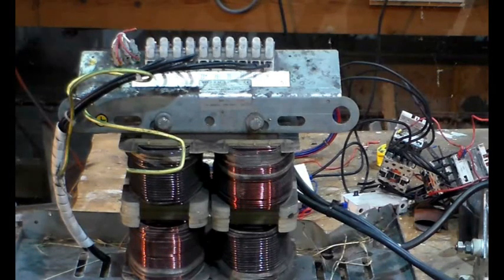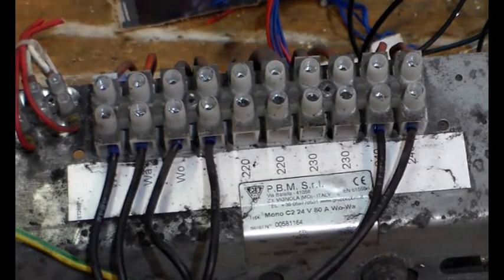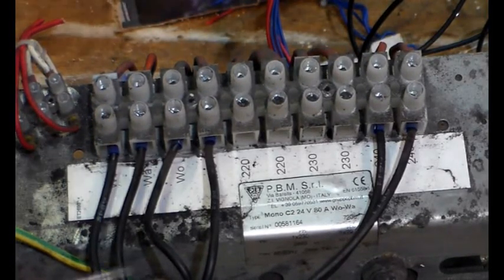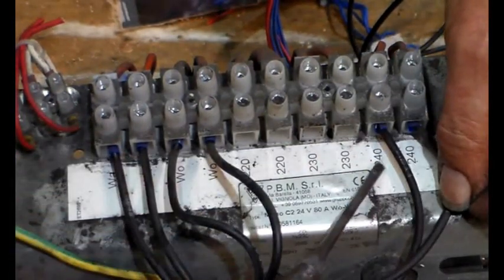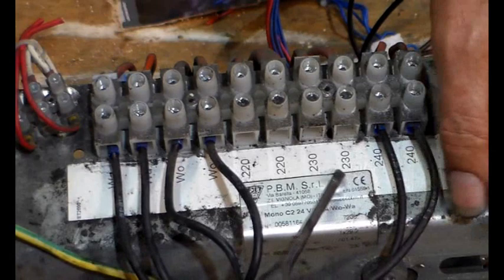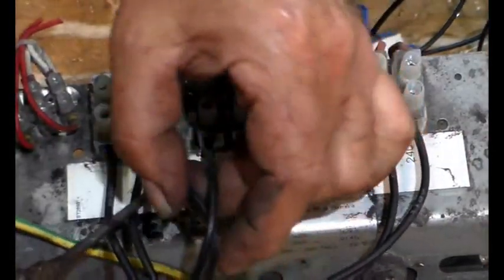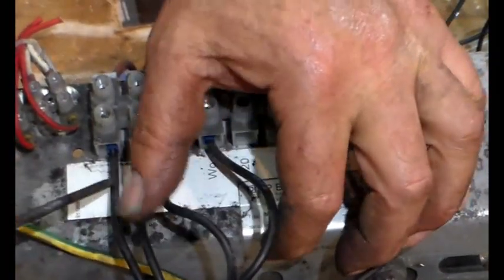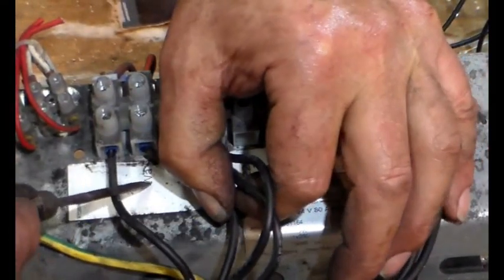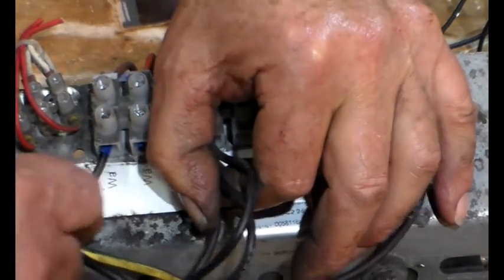Let's move forward and have a look at the connection board. We've effectively got two transformers. There are two 240 volt connections, 230 connections, 220, and then there's zero volts W and zero W A, W O.